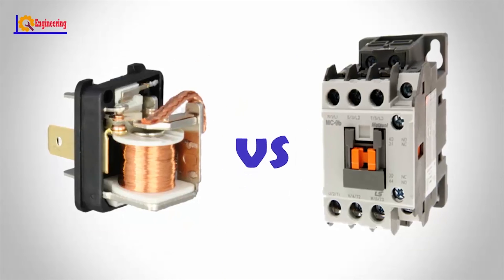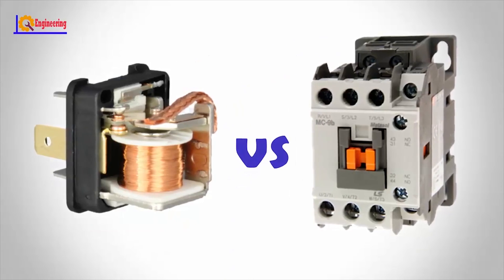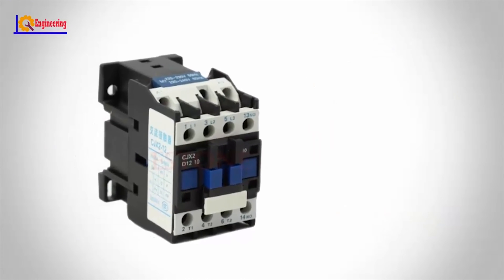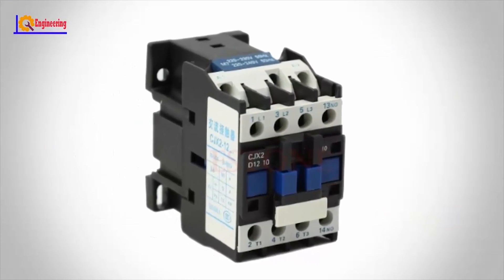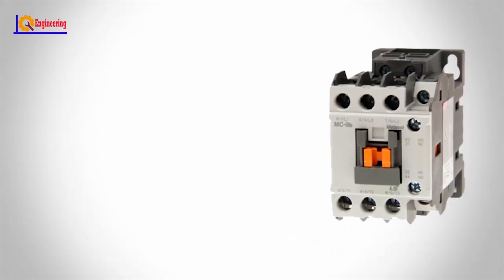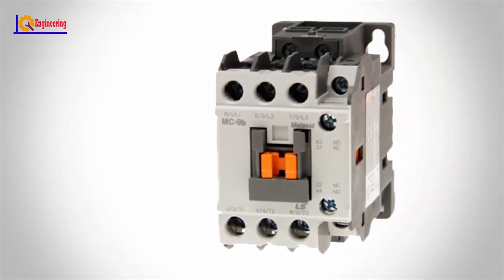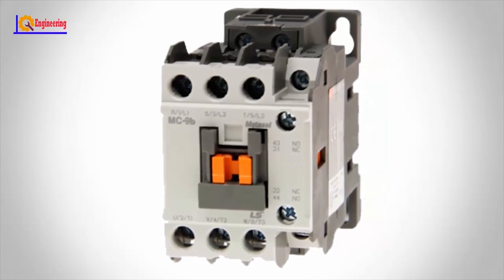The main difference between contactors and relays is the loads that they are meant to handle. Contactors are used for loads that have high voltages, high currents, or both. Contactors are used for devices that pass more than 15 amps or loads of more than 3 kilowatts.